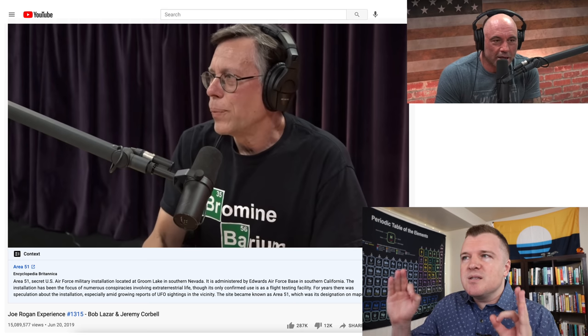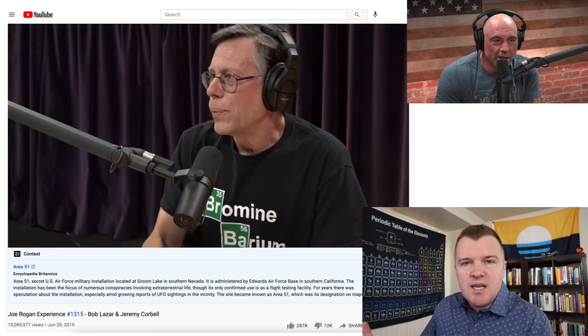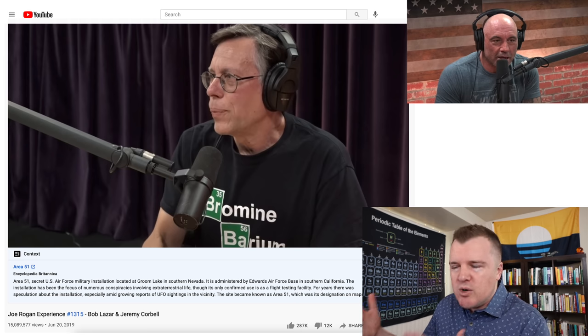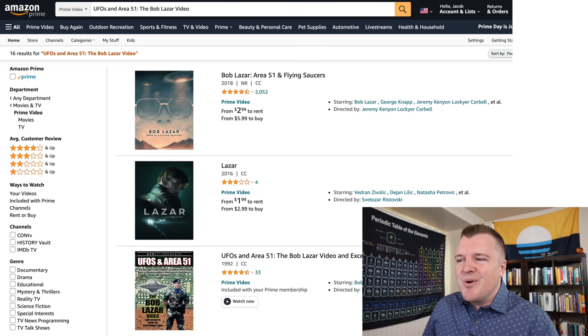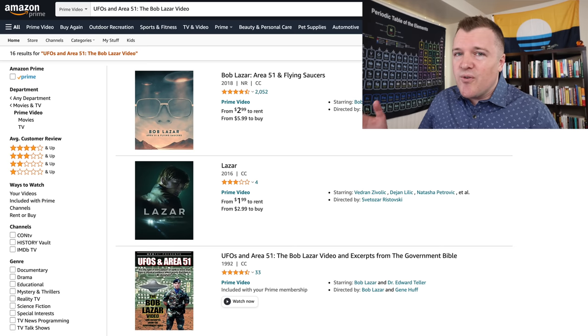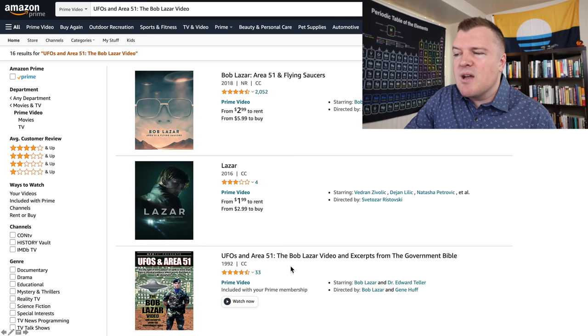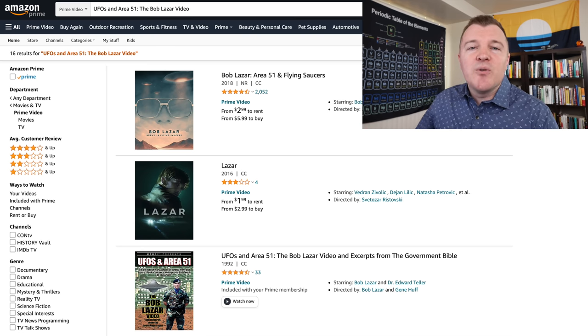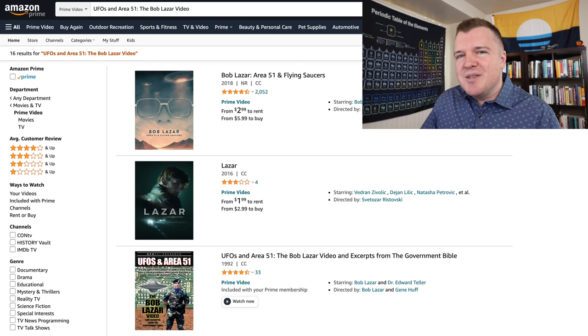However, in this video, Bob didn't really go into the full details of Element 115 and the reactor for the UFO. So people were telling me, Jake, go check out Bob Lazar's video from 1992. And you can watch this for free if you want on Amazon Prime. It's titled UFOs and Area 51, The Bob Lazar Video and Excerpts from the Government Bible. You can probably also find this on YouTube. However, they're not official copies, so the videos might be deleted, so I can't include any links. But if you really want to find this video, you can.